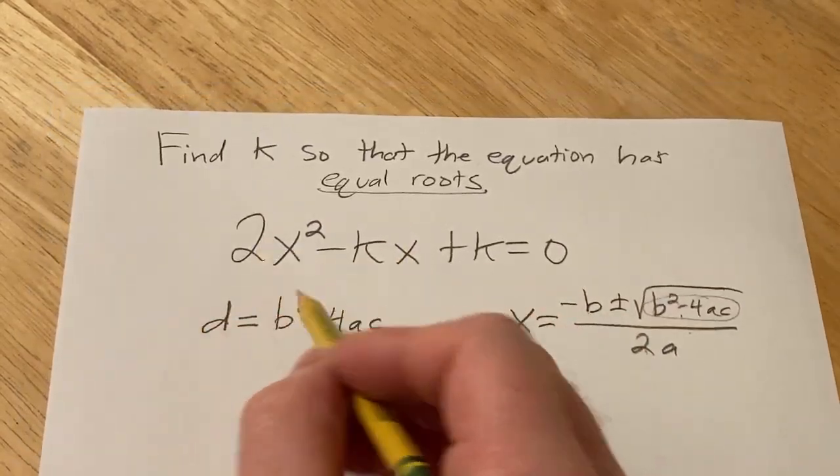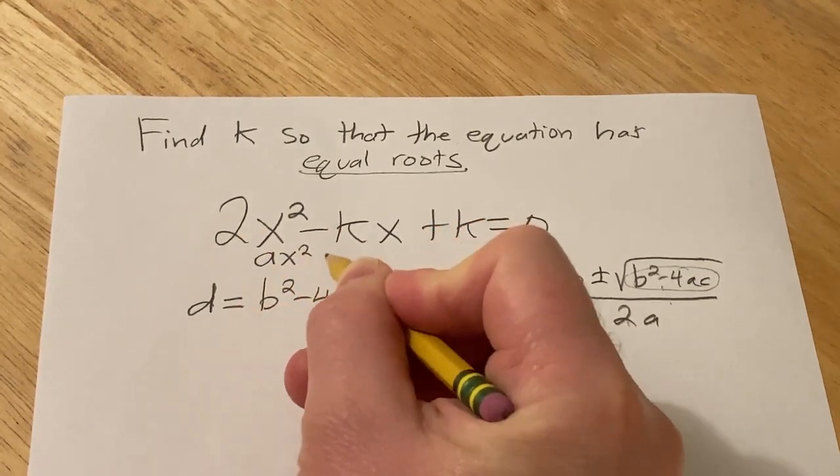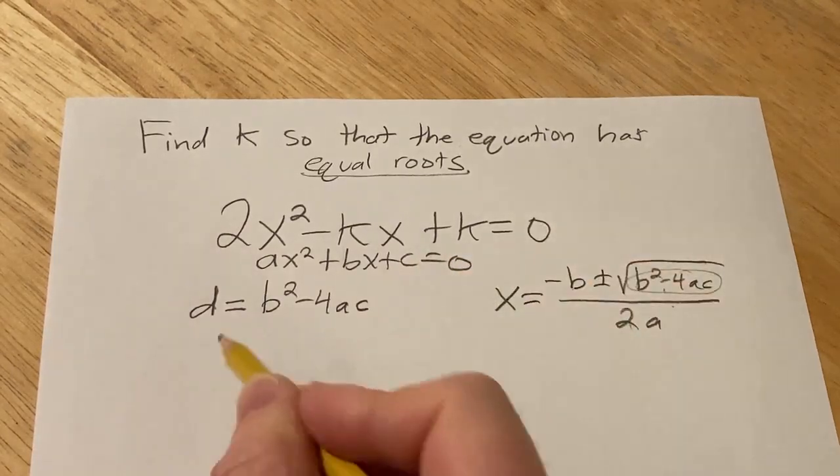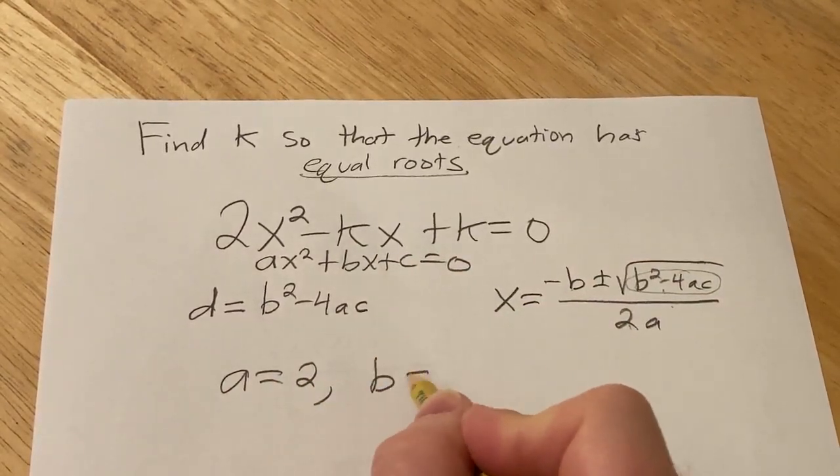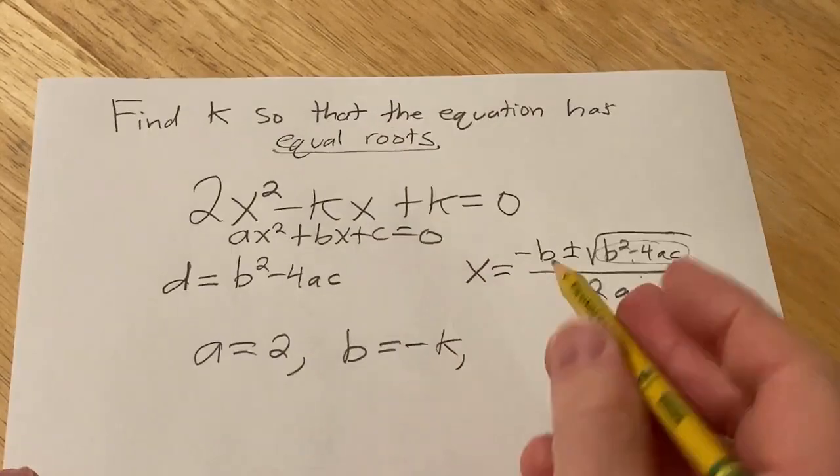So to find this, we need to find a, b, and c. The form of a quadratic equation is ax² + bx + c = 0. So using matching here, we get a = 2, b = -k, and c = k.